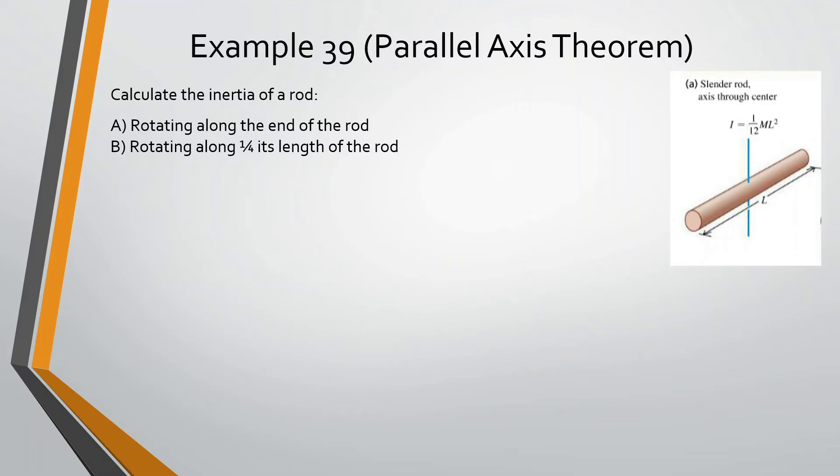So calculate the inertia of a rod rotating along the end of the rod. So we know at the center, the inertia is one twelfth ml squared. But now we want to know what is the inertia if it's all the way at the end, if it's rotating like this like a door almost. So again, the inertia at a different point is equal to the inertia center of mass plus md squared.